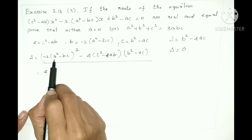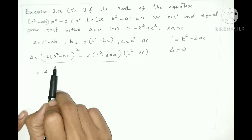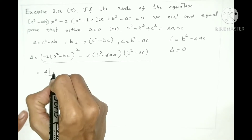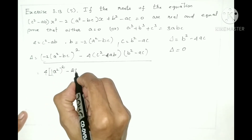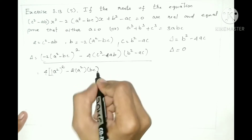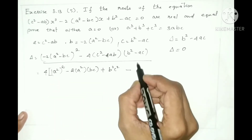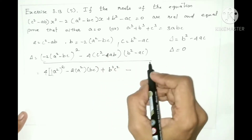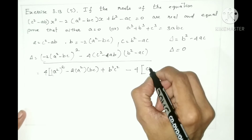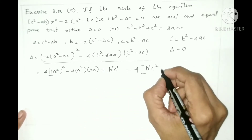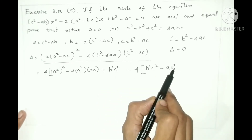We apply the formula (a minus b) whole squared equals a squared minus 2ab plus b squared. Here a squared is the a squared term, and b is bc. So expanding: a to the power 4, minus 2 times a squared times bc, plus b squared c squared. Then multiplying with 4 into c squared minus ab into b squared minus ac, we get terms: 4 b squared c squared, minus 4ac cubed, minus 4ab cubed, plus 4a squared bc.